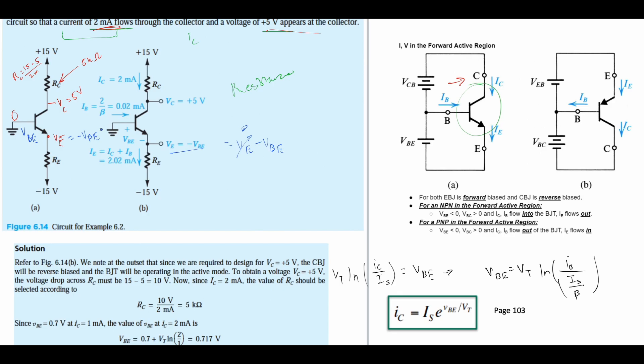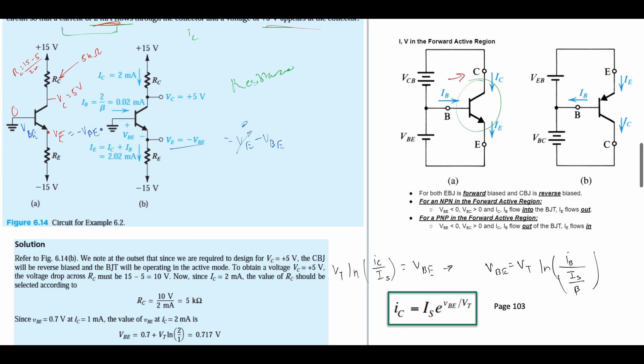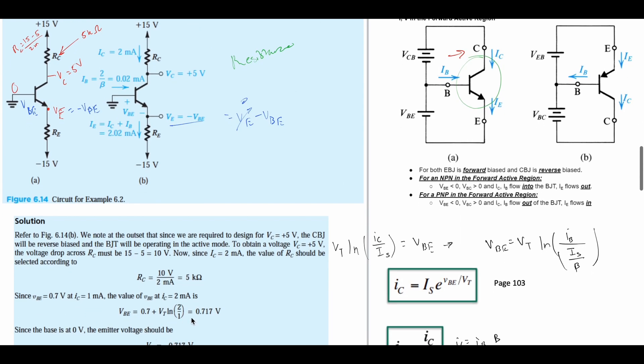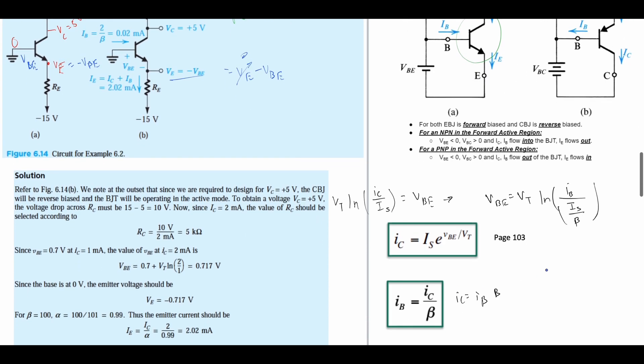So writing this out, our VBE is given to us as 0.7 volts. This equation was derived from page 103 of the notes.